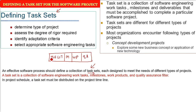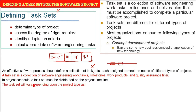In a project schedule, a task set must be distributed over the whole project timeline from start to finish. The task set will vary — task sets for different projects will be different, depending upon the kind and type of project.